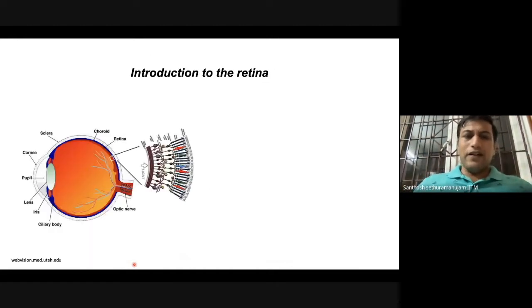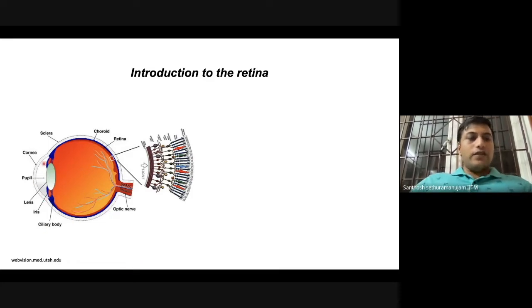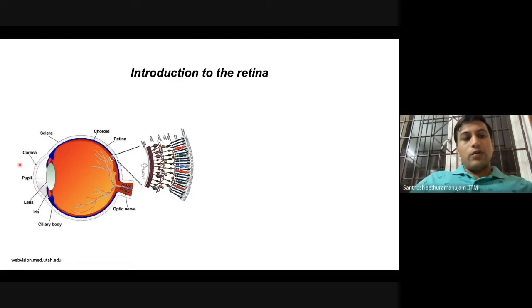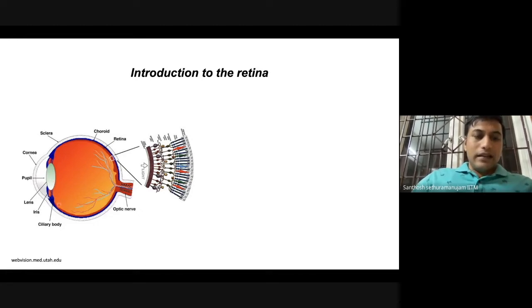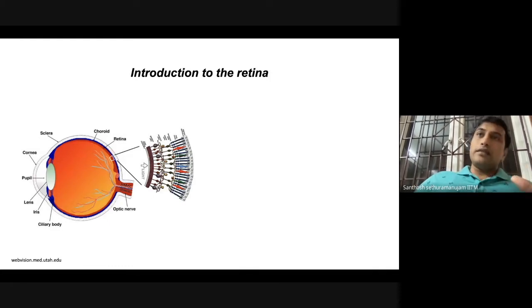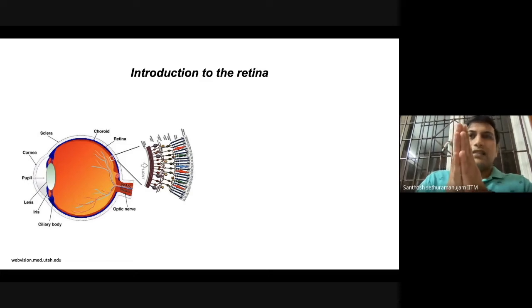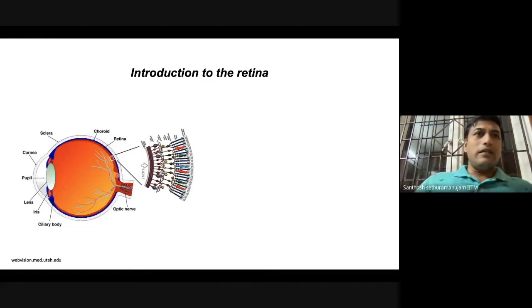Parallel processing can be observed in the retina. If you look at the eye, the front transparent portion is the cornea, which allows light to enter. A lens then focuses that light onto the back of the eye. Lining the back of the eye is a thin layer of tissue called the retina — about 0.5 millimeters thick, roughly like putting five pieces of paper together, with an overall size of about a thousand square millimeters.